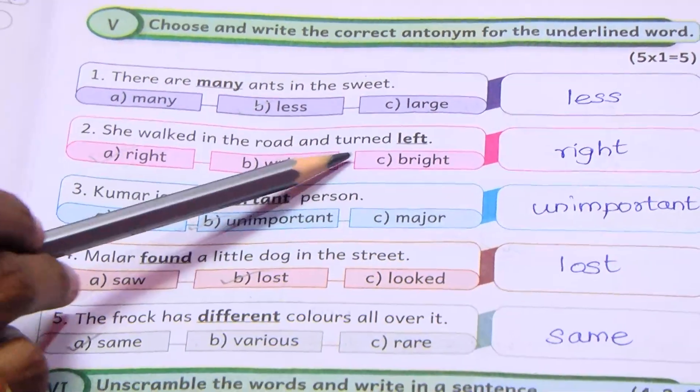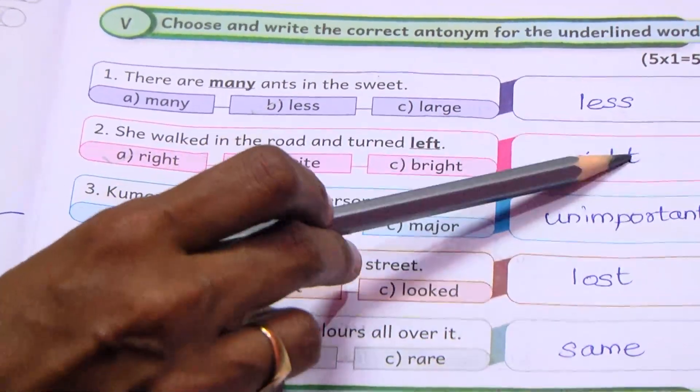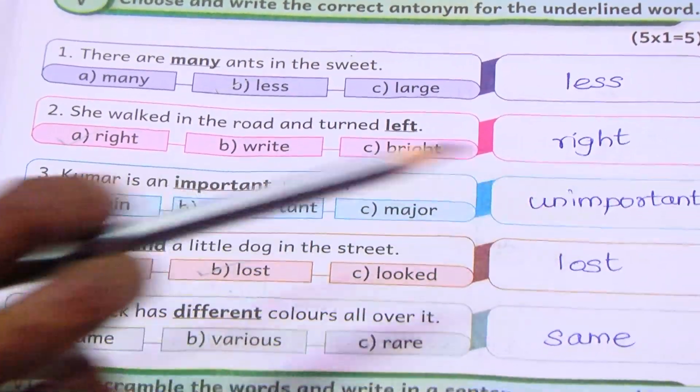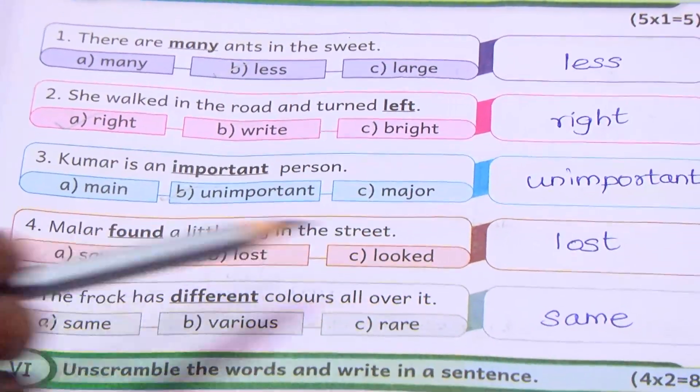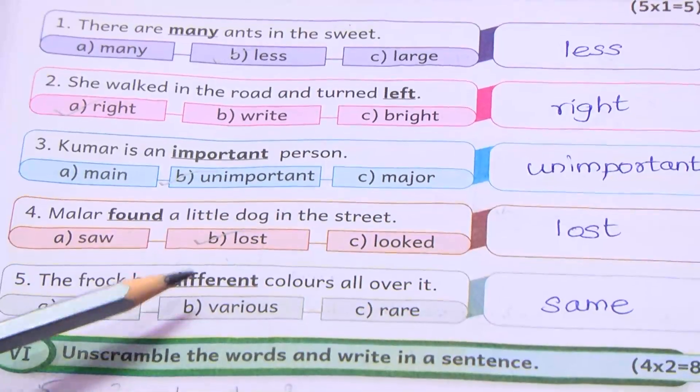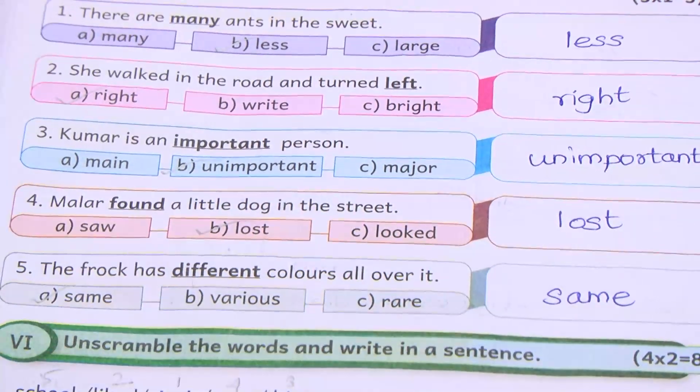Next one, choose and write the correct answer — that is, the opposite. Many — Less. Left — Right. Important — Unimportant. Found — Lost. Different — Same.